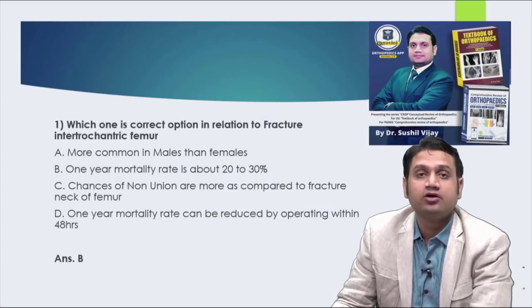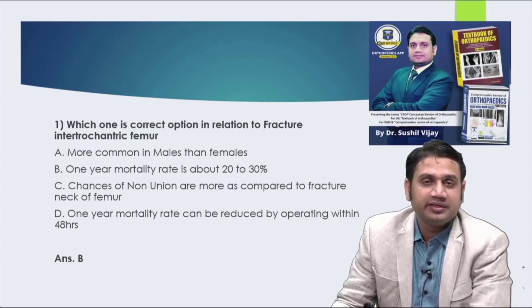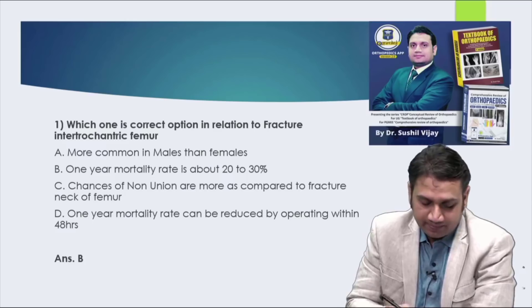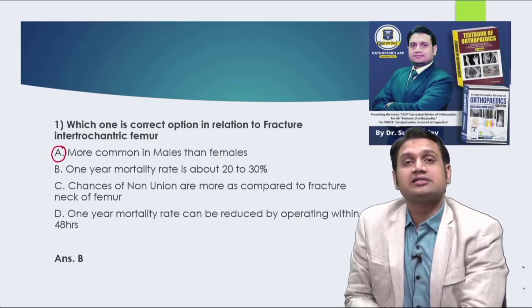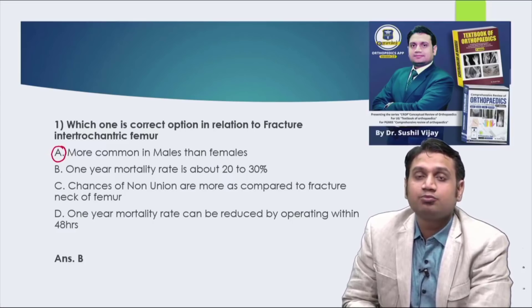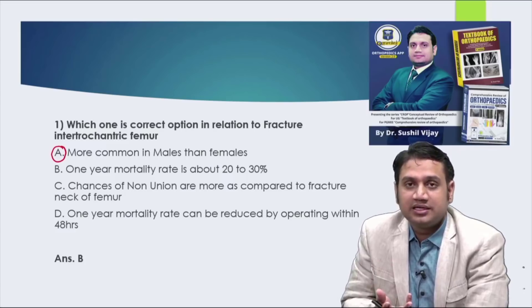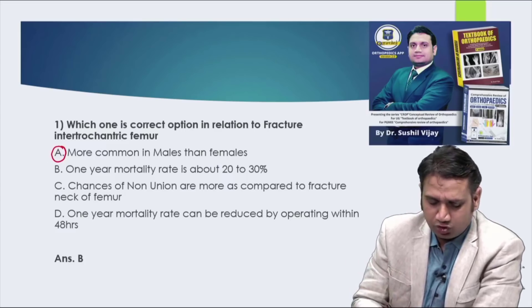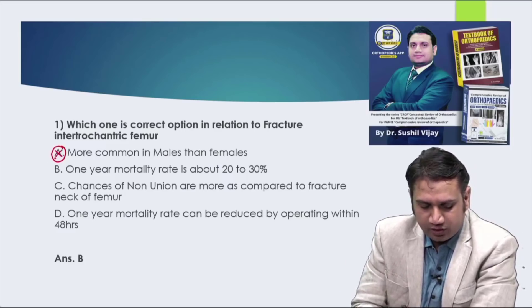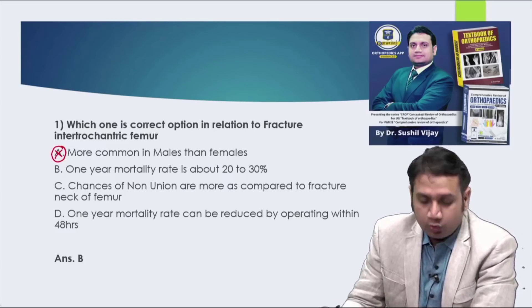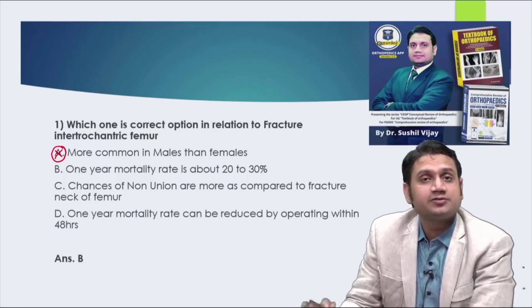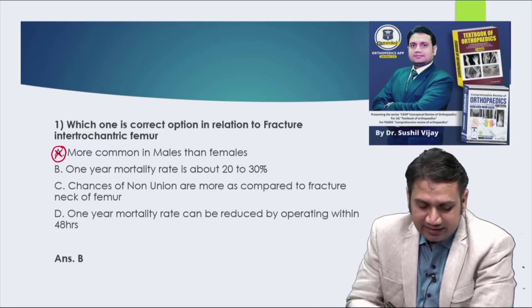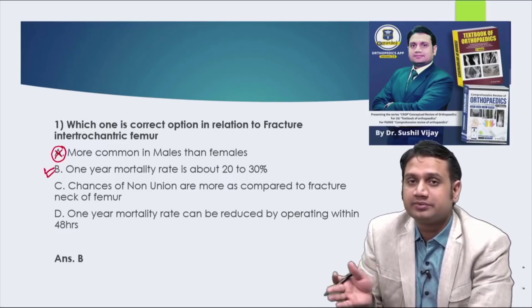Question one: which is the correct option in relation to intertrochanteric fracture of the femur? From final year we read the differences between IT fracture and neck of femur fracture. Option A says more common in males than females — both proximal femoral fractures are actually more common in females due to postmenopausal osteoporosis. Option B says one-year mortality rate is around 20 to 30 percent — that is correct, irrespective of advancements like proximal femoral nail or dynamic hip screw, mortality remains approximately 25 to 30 percent.